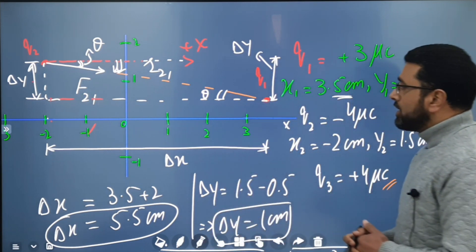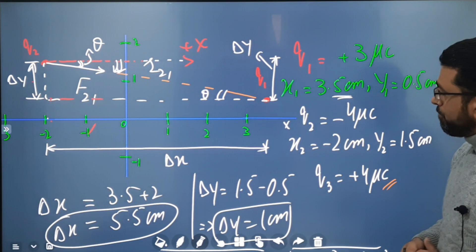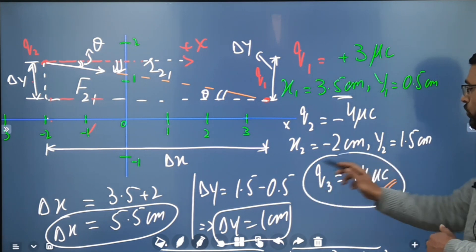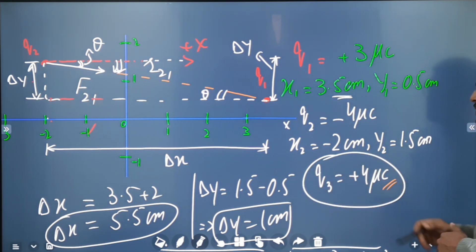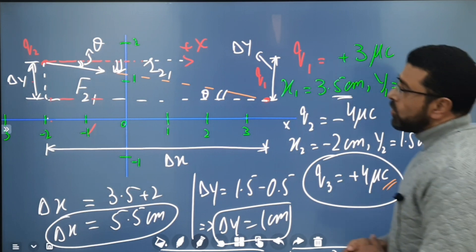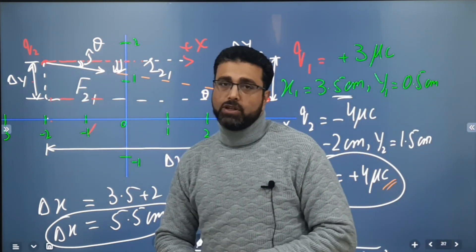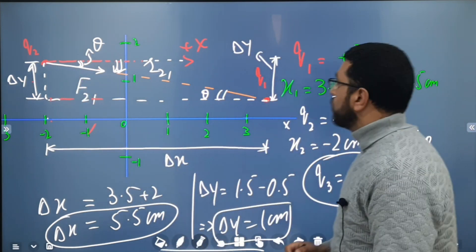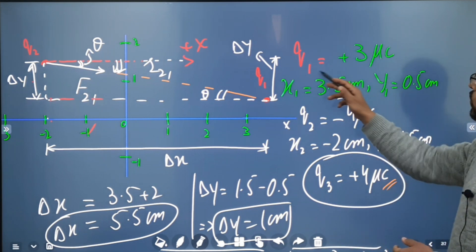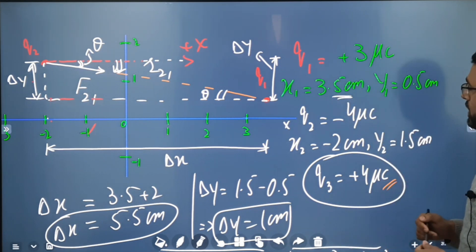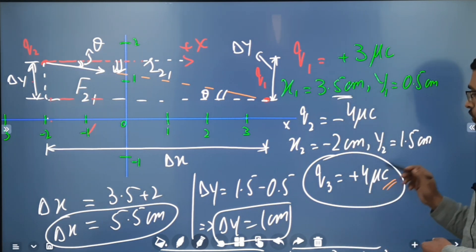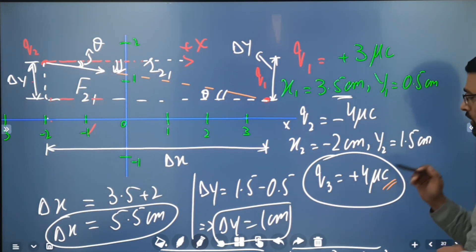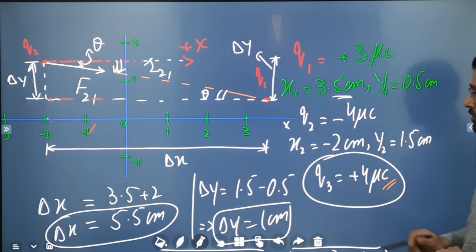For the second part, we need to place charge q3 — which is plus 4 microcoulombs — somewhere such that the net force on q2 becomes zero. Q1 is positive, q2 is negative, and q3 is positive.